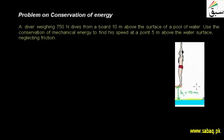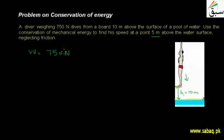When the diver falls from the board, it will fall down. At the starting point, the distance is 10 meters. We have to calculate the velocity at a certain point. The distance from the surface to that intermediate point is 5 meters.